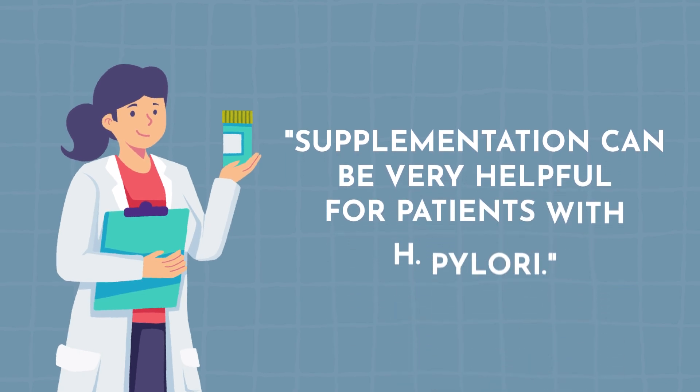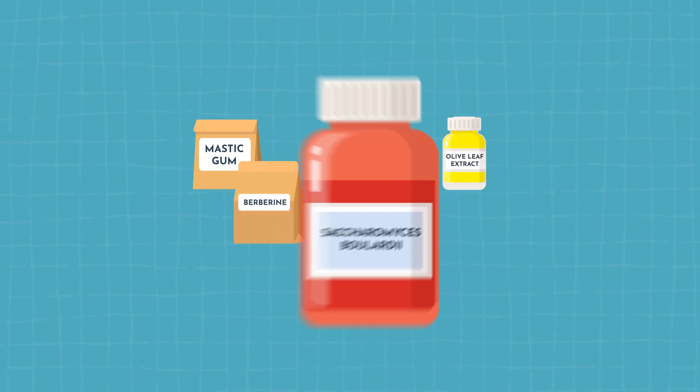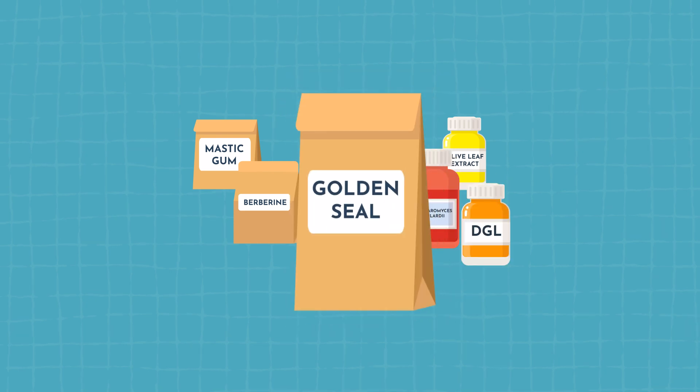Supplementation can be very helpful for patients with H. pylori. Some of the most common supplements used to eradicate this pathogen are things like mastic gum, berberine, olive leaf extract, saccharomyces boulardii, DGL, and goldenseal.